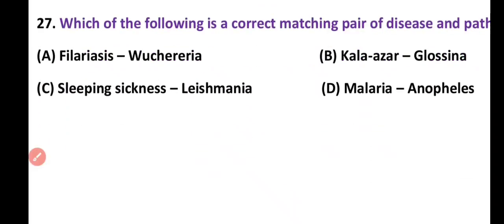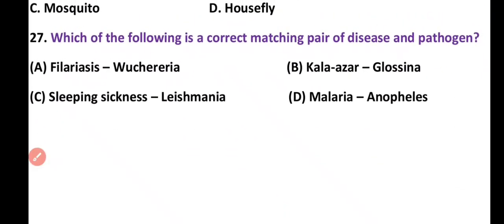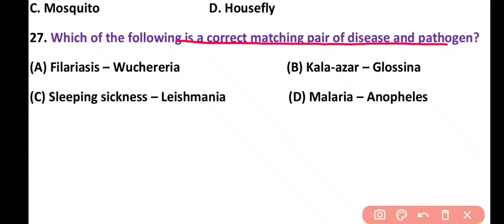Question 27. Which of the following is a correct matching pair of disease and pathogen? Kala-azar is caused by Glossina? Sleeping sickness is caused by Leishmania? Malaria is caused by Anopheles?